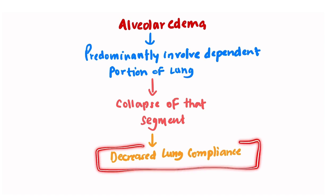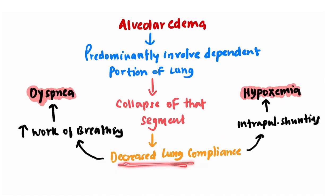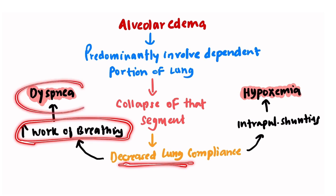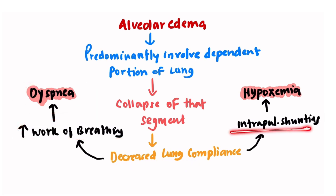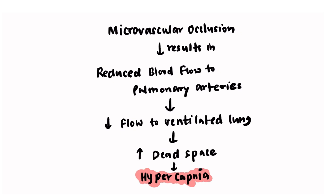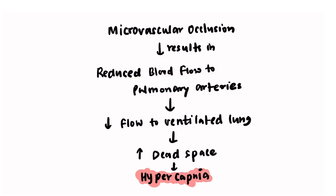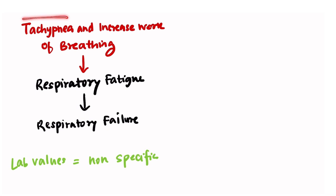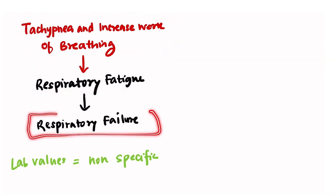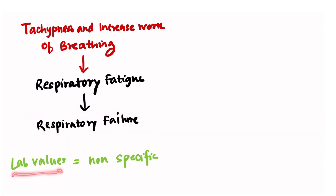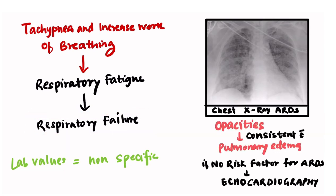Alveolar edema predominantly involves the dependent portion of the lung, leading to collapse of that segment and decreased lung compliance. This increased work of breathing leads to dyspnea. Intrapulmonary shunting leads to hypoxemia, while microvascular occlusion reduces blood flow to the pulmonary arteries, increasing dead space and causing hypercapnia. Tachypnea and increased work of breathing ultimately lead to respiratory fatigue and respiratory failure.